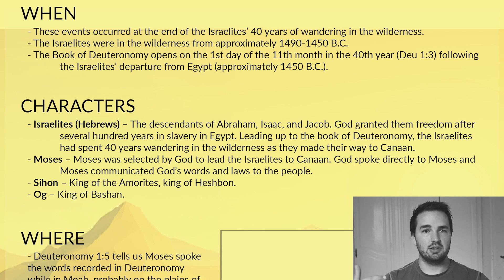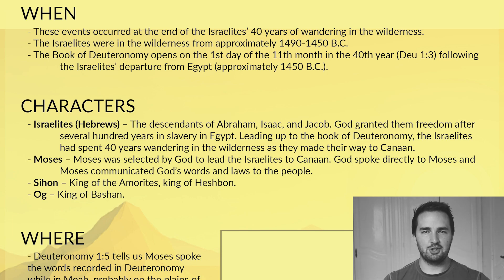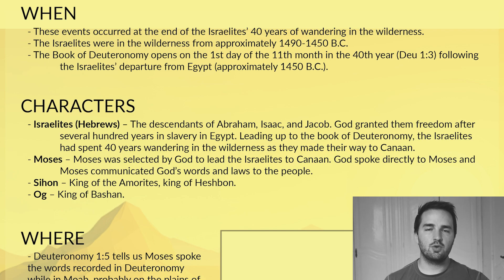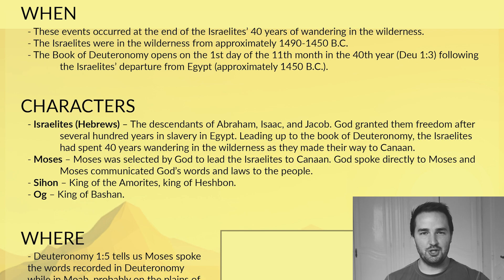He talked to Moses directly, and then Moses communicated God's words to the people. We've also got two side characters here. They're featured in a couple chapters in the Old Testament, but the first one is a guy named Sihon. Sihon was the king of the Amorites, and then we've got Og. You can name your kid Og if you want to. Og was king of Bashan, and these are two kings who the Israelites defeated in battle.